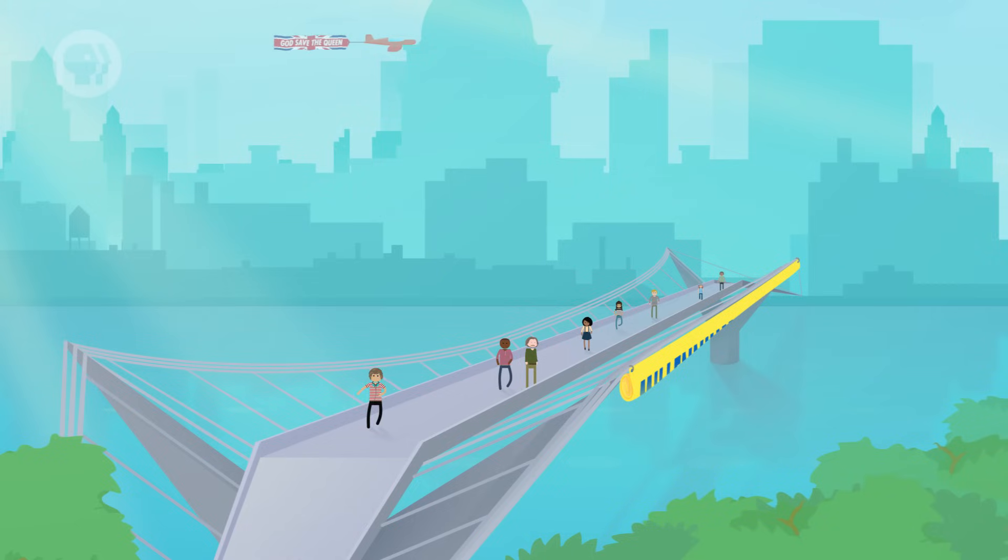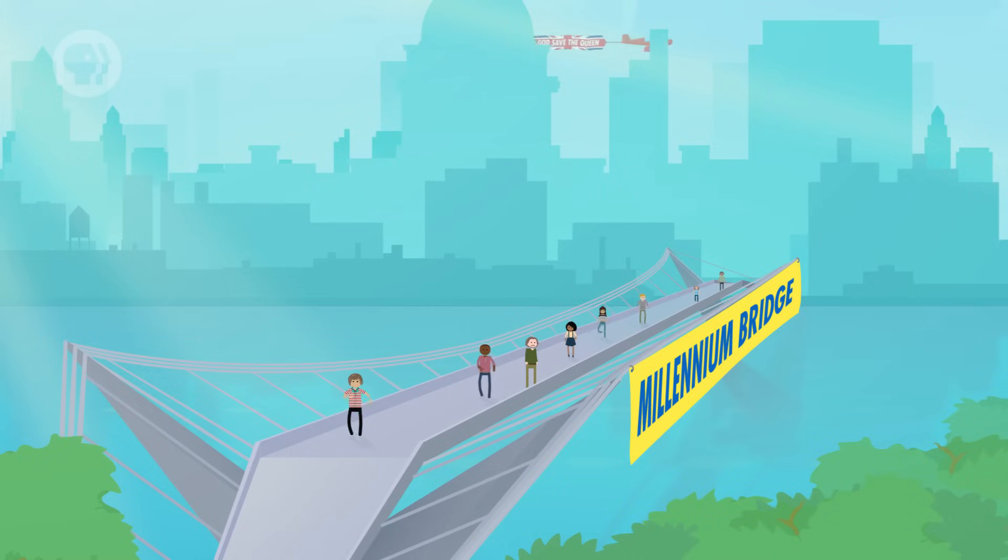In June 2001, officials in London unveiled a striking new feat of engineering – the Millennium Bridge, a pedestrian bridge spanning the River Thames. It promised to be very useful, and it was cool to look at, but it had to be closed almost immediately.